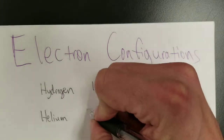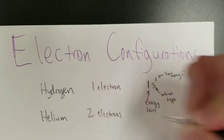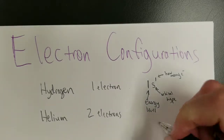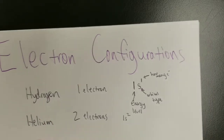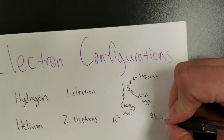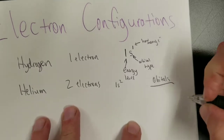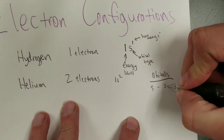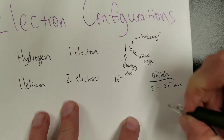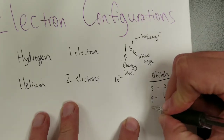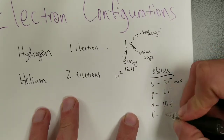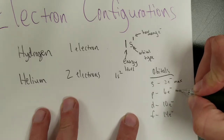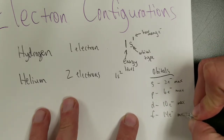Helium has two electrons, so its electron configuration is 1s2 — energy level one, spherical shape, both electrons in there. When it comes to orbitals, there are four kinds: S orbitals hold up to 2 electrons max, P orbitals hold up to 6 electrons, D orbitals hold up to 10 electrons, and F orbitals hold up to 14 electrons. These are maximums — they can have less, but not more.